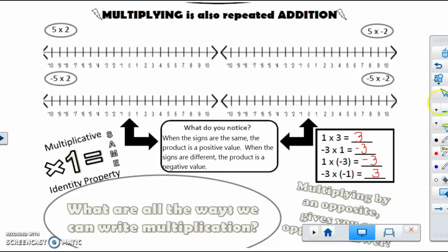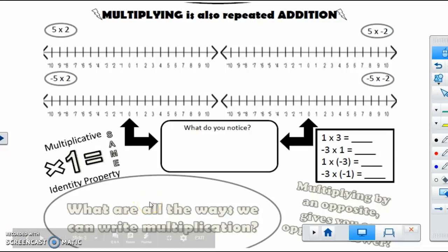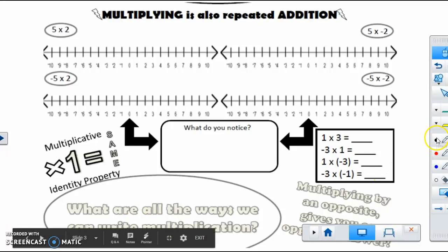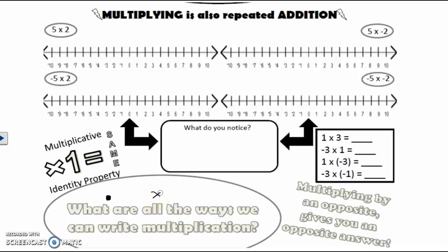Take a minute, pause the video, and think about what we've just talked about. The question asks: what are all of the ways we can write multiplication? We can use the dot, the x sign — though in algebra we'll stop using x because it could get confusing with the variable — and we can always use parentheses.